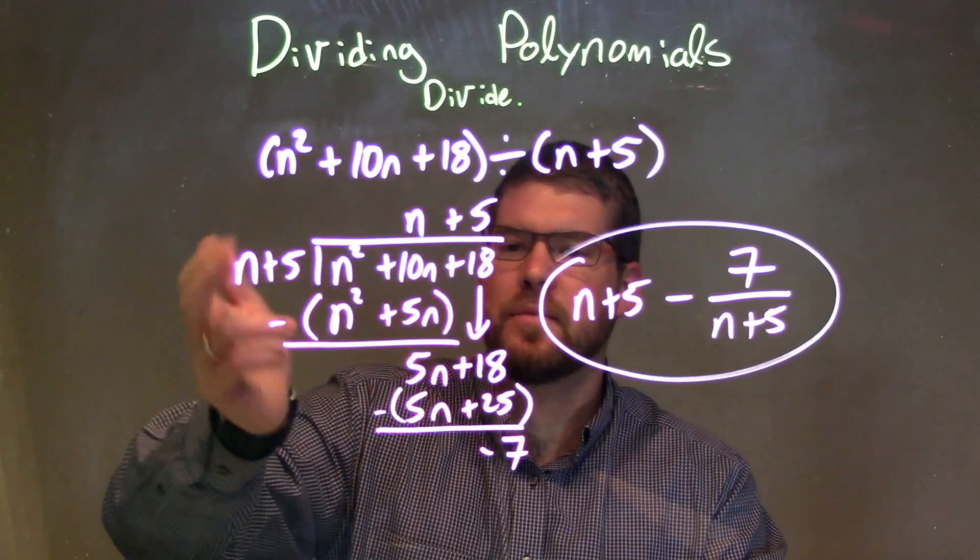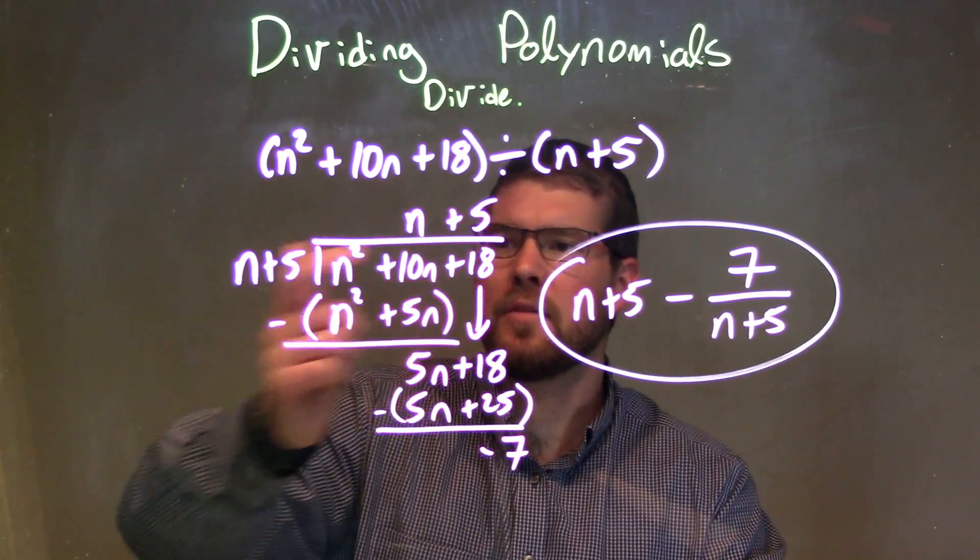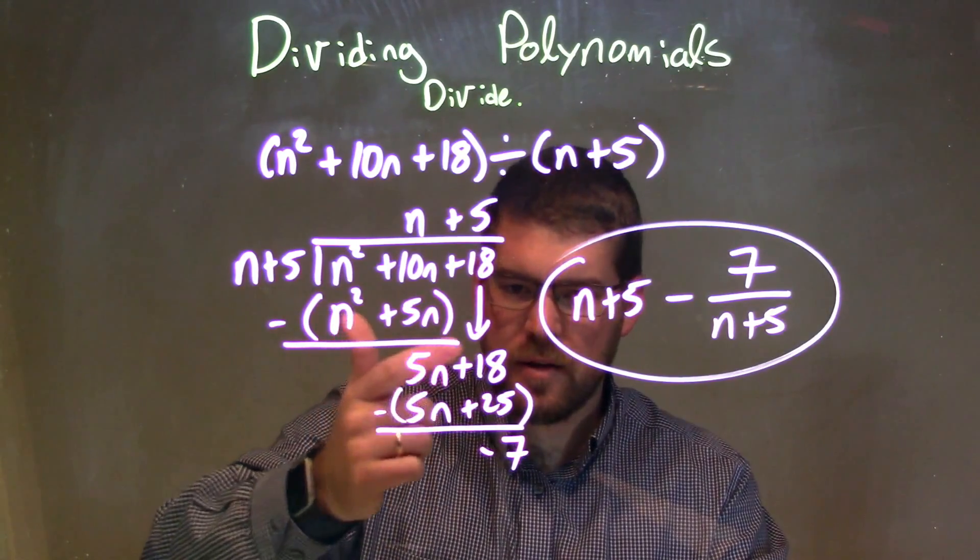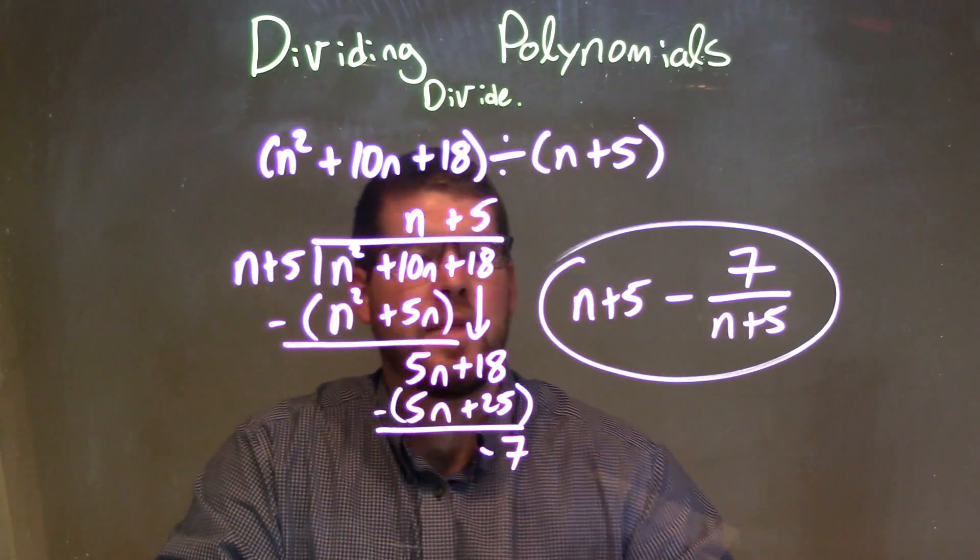Then we said, what times n gives me 5n? That's a 5. 5 times n is 5n. 5 times 5 is 25. Great. Subtracted them. Got a negative 7. So that's our remainder.